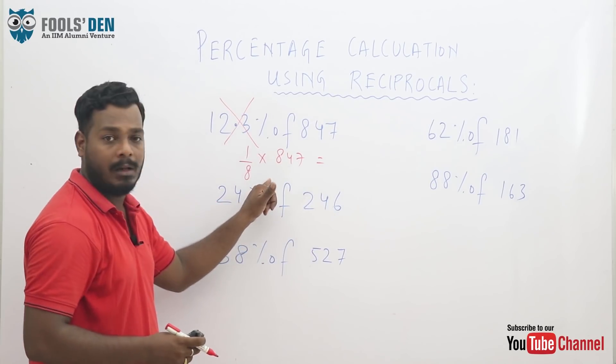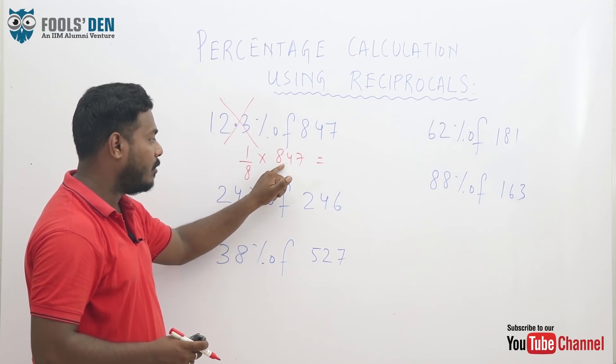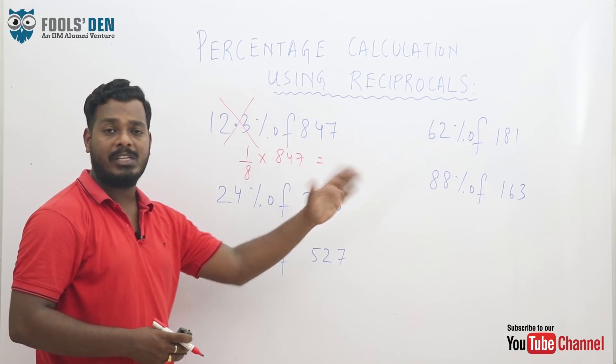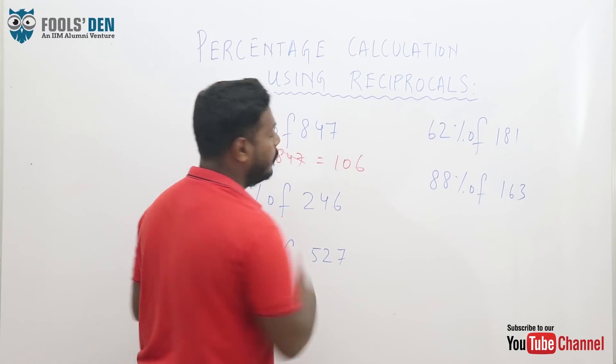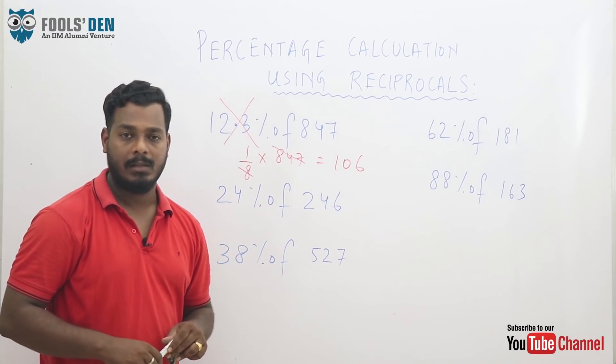So 1 by 8 of 847. Now this is a simple division. A percentage has got converted into a simple division which can be calculated very easily. You divide this by this, approximately the value will be 106.